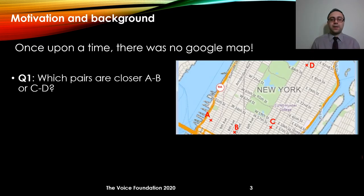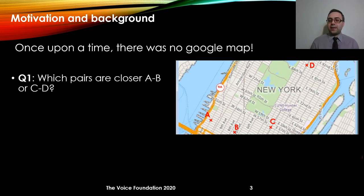Let's start with the motivation. Here is a map of New York and there is a simple task we want to do: we want to say if the distance between A and B is smaller or if the distance between C and D is smaller. By looking at this image we can tell that the distance between AB is much smaller than the distance between CD.